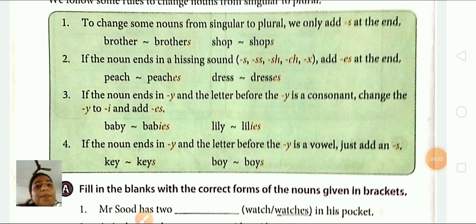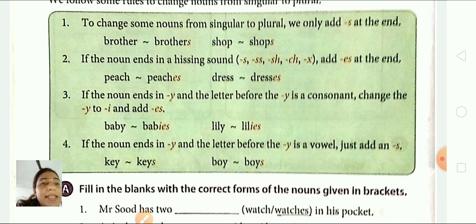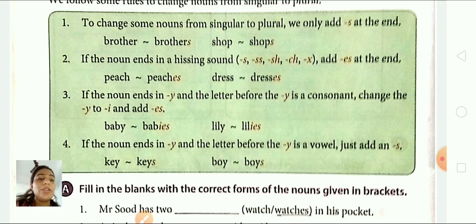Now the fourth rule. If the noun ends in Y and the letter before the Y is a vowel, just add S. For example, key, keys; boy, boys. You can see that the letter before the Y is E, and E is a vowel. The vowels are A, E, I, O, U. So here, E is a vowel, so we just add S to make it plural.